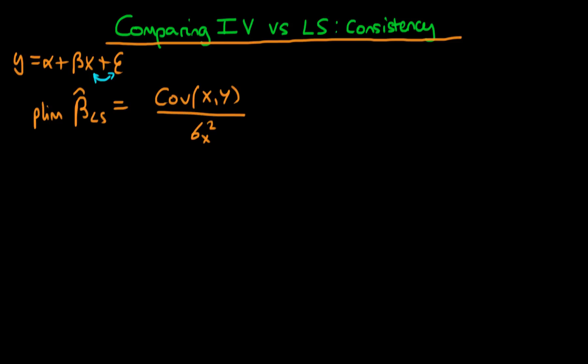And this is the probability limit because I've replaced the sample sort of things which we would normally have here on the top and the bottom with their population analogs. So whenever you see the covariance as it's written here we're talking about population quantities.